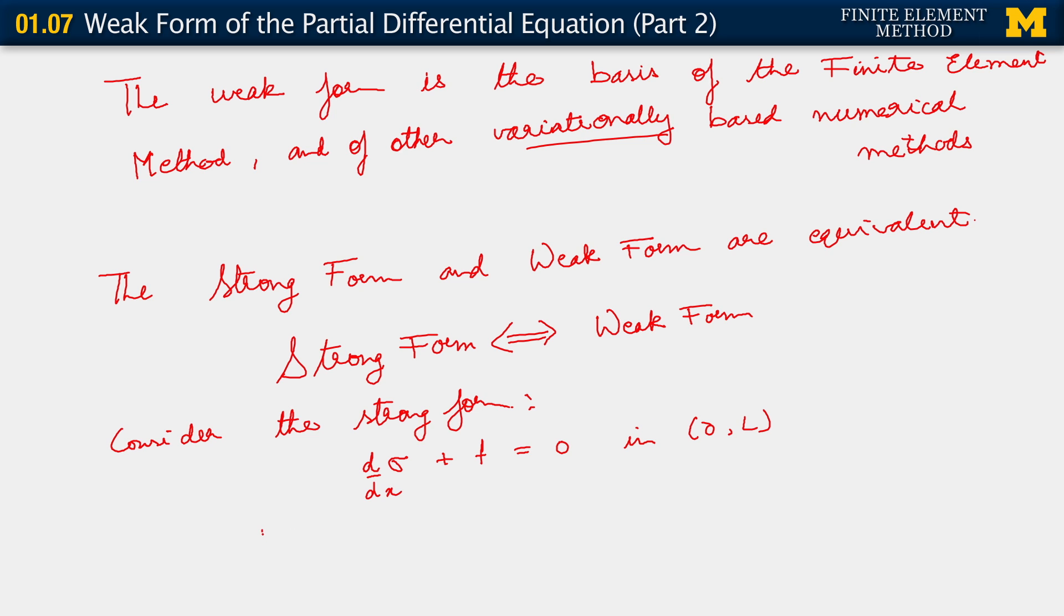With the boundary conditions, BC for short. Now, the boundary conditions we have are the following: U at 0 equals u naught. Because we've written out the weak form for a single Dirichlet boundary condition only at x equals 0, that's what we have to assume for the strong form as well. We need to consider that strong form.